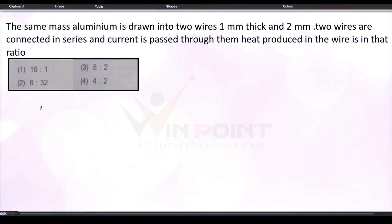The same mass of aluminum is drawn into two wires — one 1 millimeter thick and one 2 millimeter thick. These two wires are connected in series and current is passed through them. We need to find the ratio of heat produced in the wires. The options are 16:1, 8:16, 1:8, 8:32, 8:2, and 4:2.